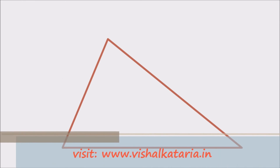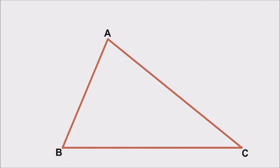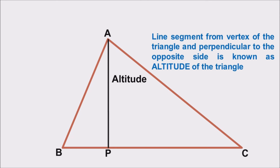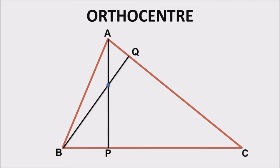Again, plot a triangle and label it as ABC. Draw a perpendicular line from A to BC. This perpendicular line from a vertex to a side is defined as an altitude. The line segment from a vertex of a triangle perpendicular to the opposite side is known as an altitude. Let's plot another altitude BQ. AP and BQ intersect at a point, and this point of intersection is defined as the orthocenter of a triangle.